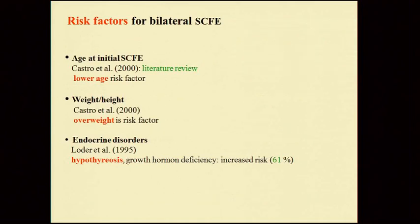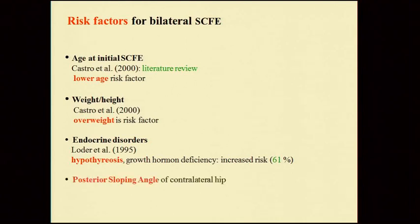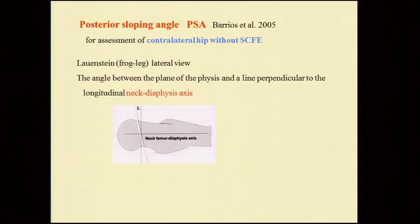There are certain known risk factors for bilateral slipping. Lower age is a known risk factor, as is overweight, and endocrine disorders like hypothyroidism. In recent years, another risk factor has emerged: the posterior sloping angle (PSA) of the contralateral hip, described by Barriers in 2005 for assessment of the contralateral hip.